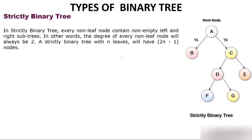First is strictly binary tree. The definition says that in a strictly binary tree every non-leaf node contains non-empty left and right subtrees. Leaf nodes are those that don't have any child. Non-leaf nodes are A, C, and D. So every non-leaf node will have two children — that is what makes it a strictly binary tree.